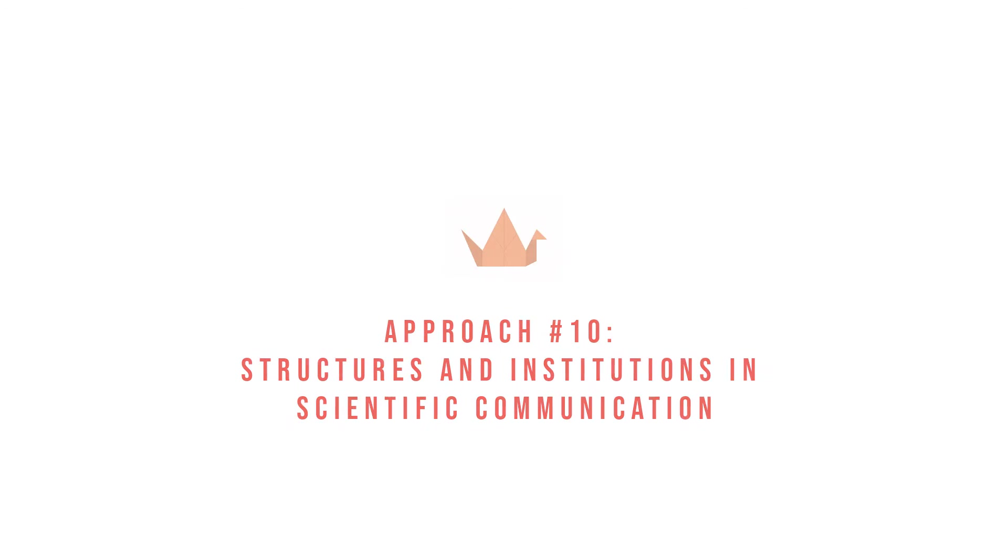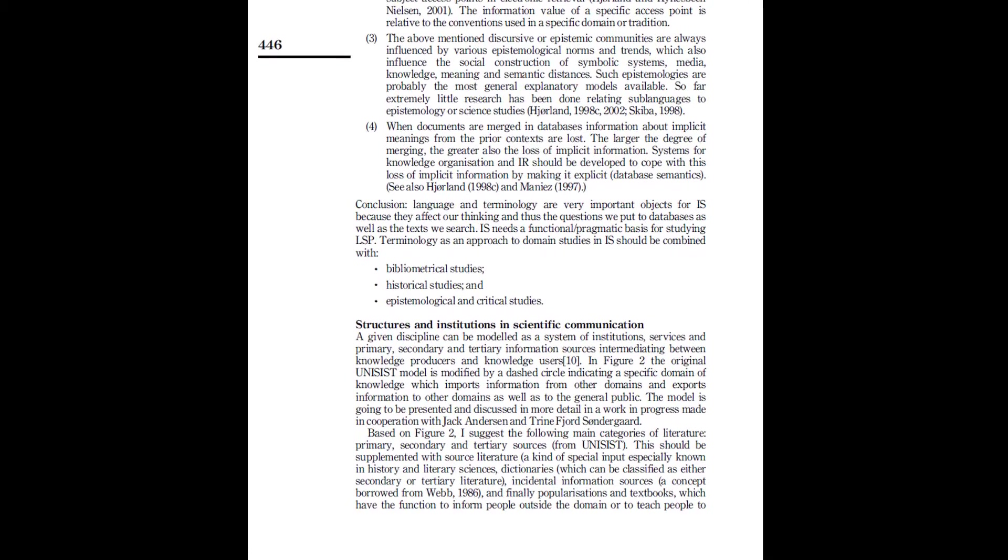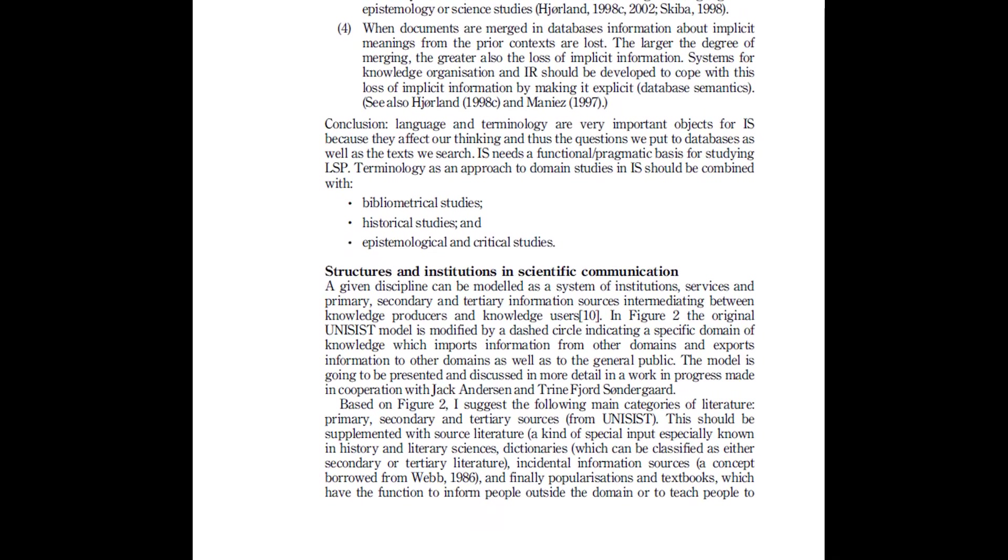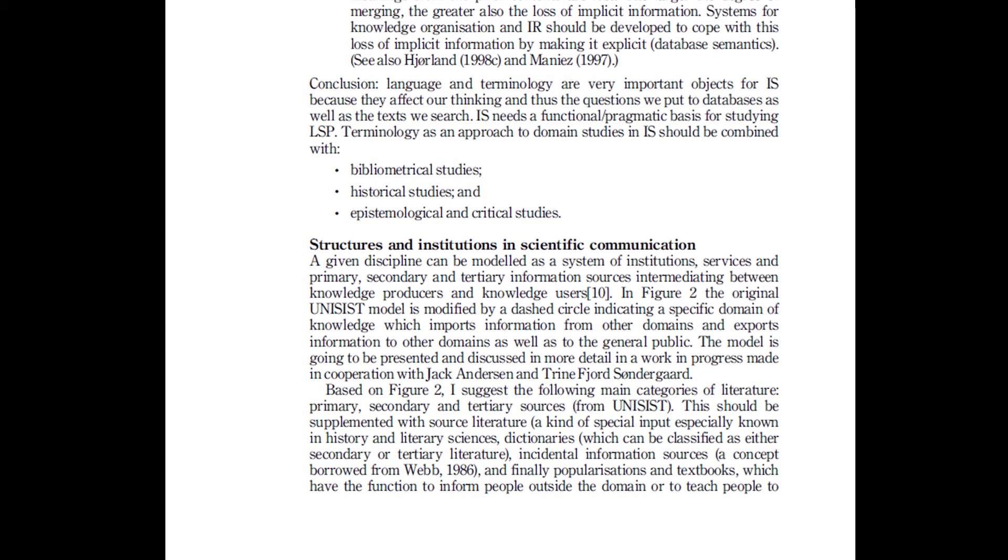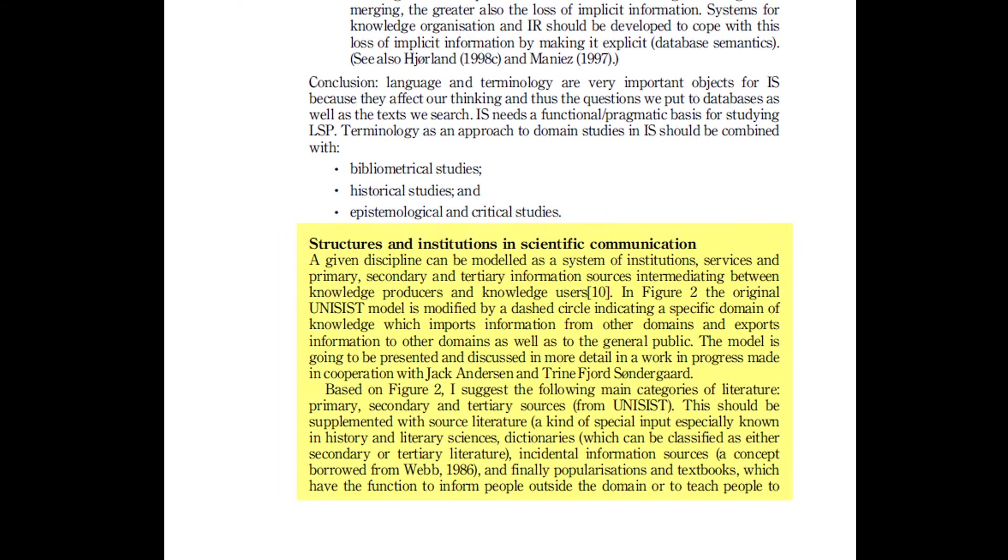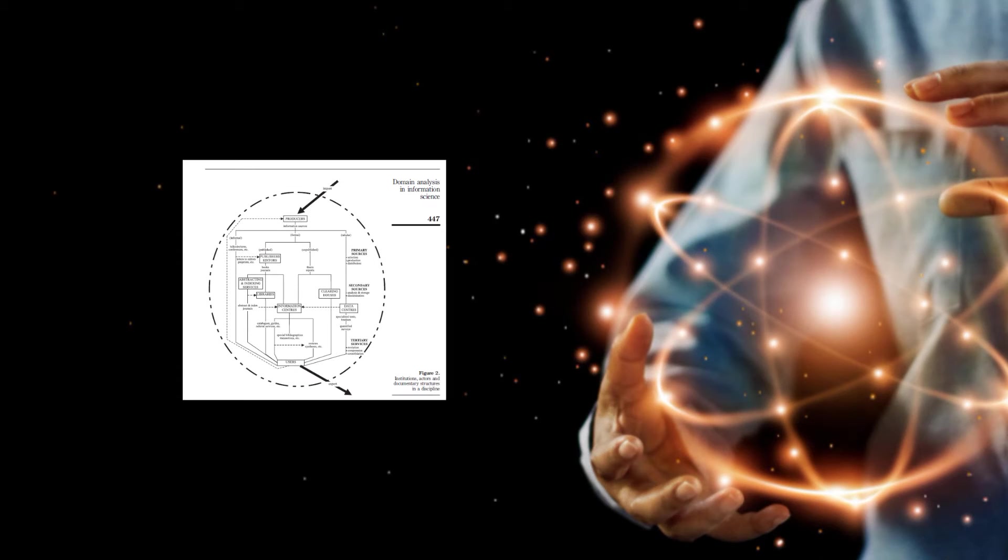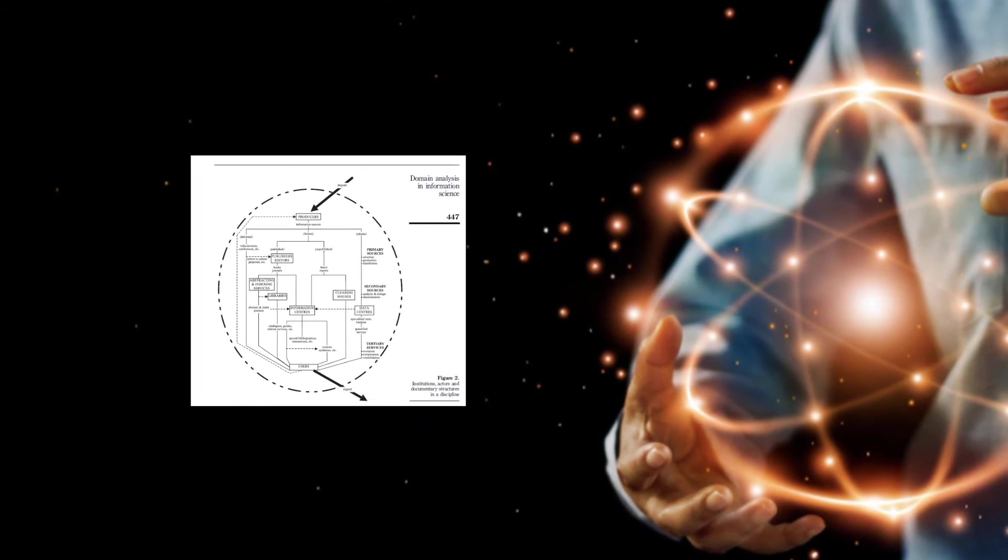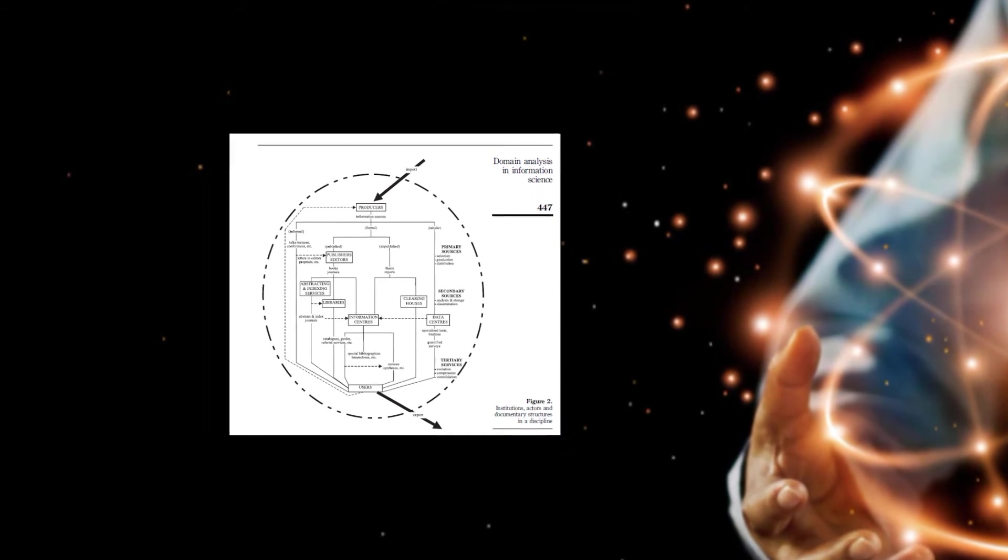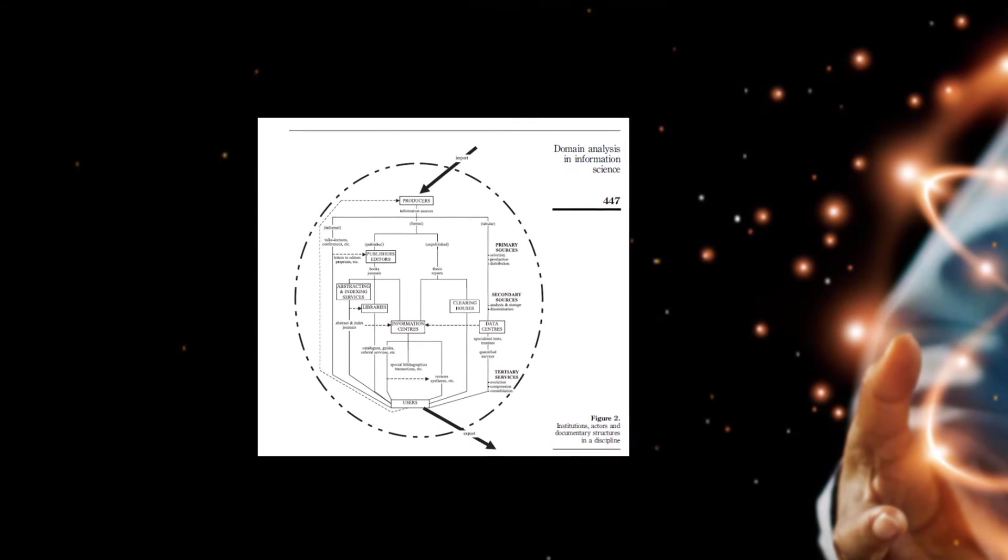Another domain analytic strategy focuses on the structures and institutions that underlie scientific communication. This means applying a systems perspective to better understand how domains function as importers and exporters of knowledge. As an example, Hjørland points to a 1971 model by the United Nations of the social system of communication in the sciences, shown here, with its various actors, organizations, documentary forms, and modes of formal and informal information exchange.